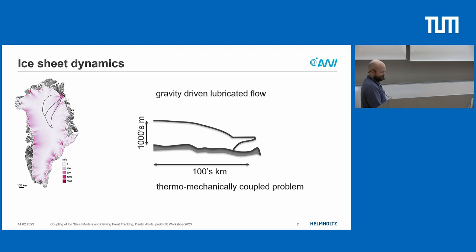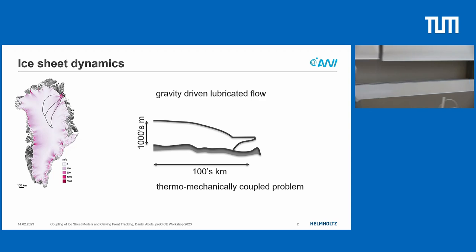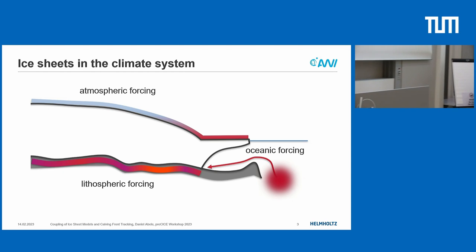And it's a thermomechanically coupled problem, meaning our viscosity is non-linear and strain-thinning. The ratio of the viscosities over the vertical is up to a factor of 2,000. So it's warm at the base, it's cold in the middle and at the top, which makes it particularly tricky.